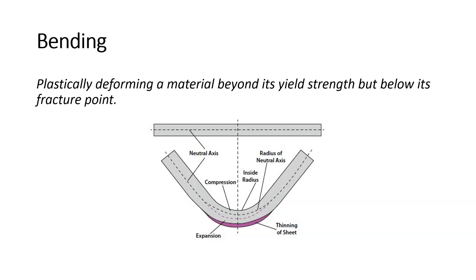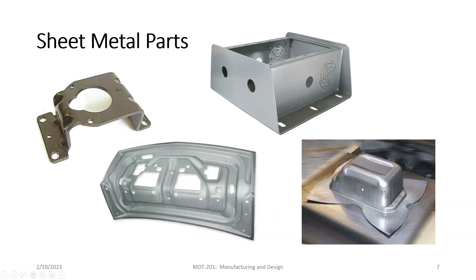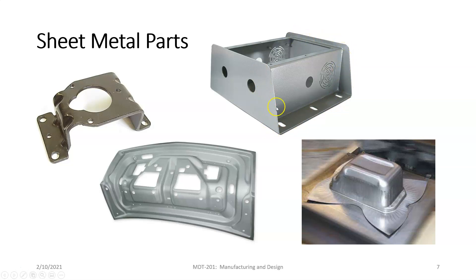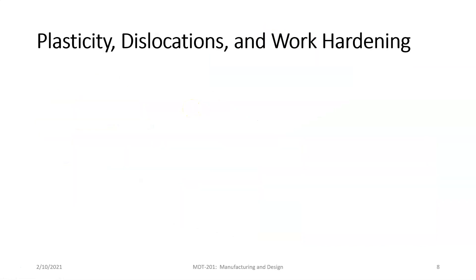Some examples of sheet metal parts: a bracket, the inside of a car door, what looks like an oil reservoir for a car or some kind of sink. What's amazing is that this all starts from a flat sheet. A shape like the bracket is probably bent from several flat sheets because there's no way to make a complex shape like that from one part.